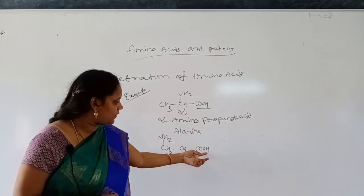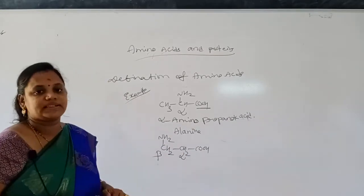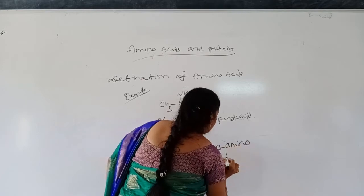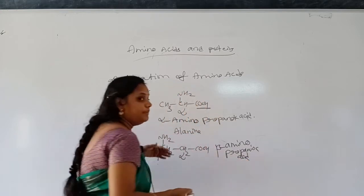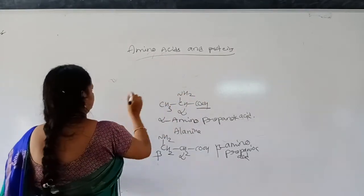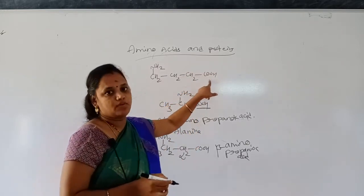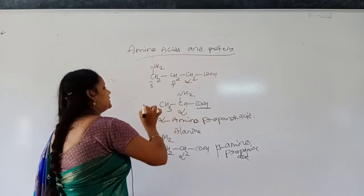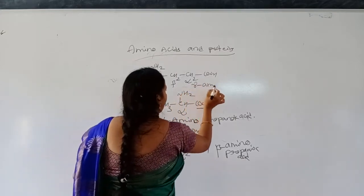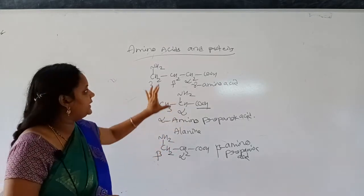The COOH functional group is attached to this carbon, so this carbon is alpha and the next carbon will be beta. In one case, the NH2 group is attached to the beta carbon — hence it is called beta amino propanoic acid. This is a beta amino acid. In another structure, from COOH: next carbon is alpha, next is beta, next is gamma. The amino group is attached to the gamma carbon, hence it is called a gamma amino acid.